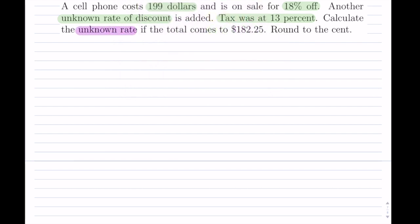Tax is 13% and we want to calculate the unknown rate. That's what we want to find and we know that the total comes to $182.25, and then we'll round it to the cent at the end there. So let's set this up.